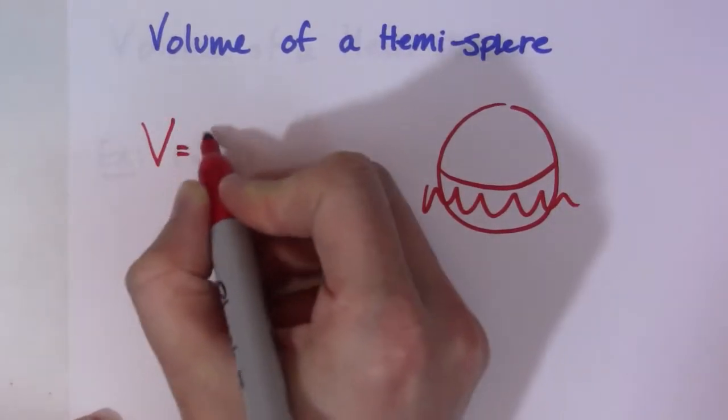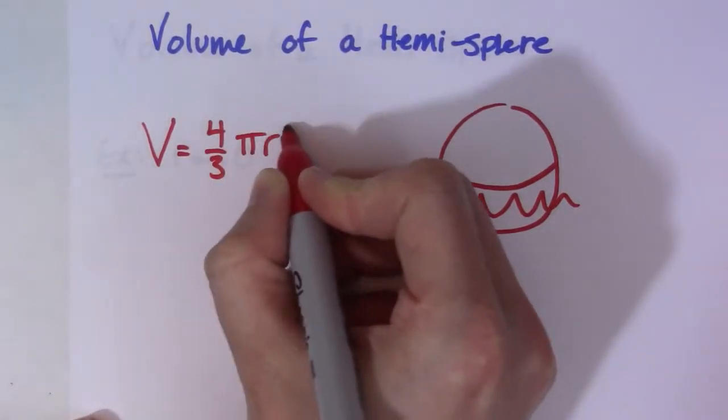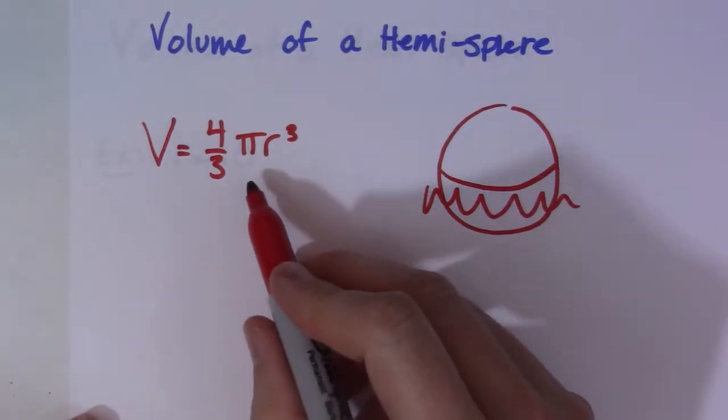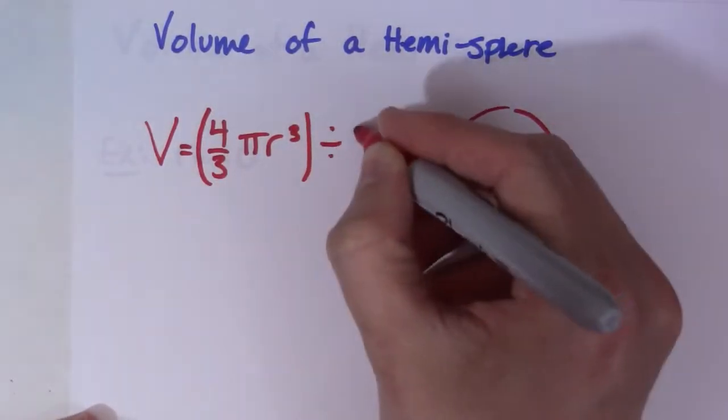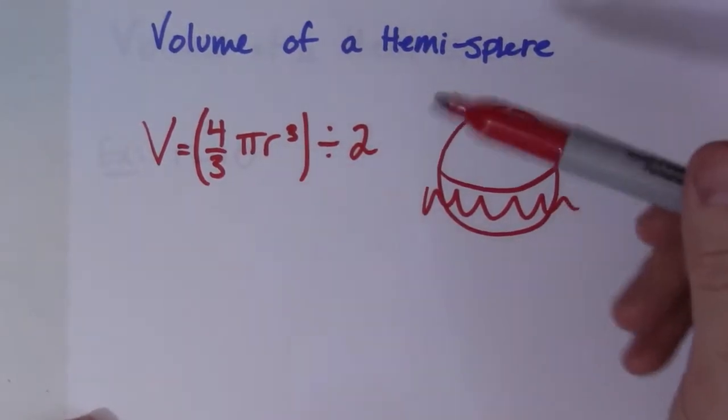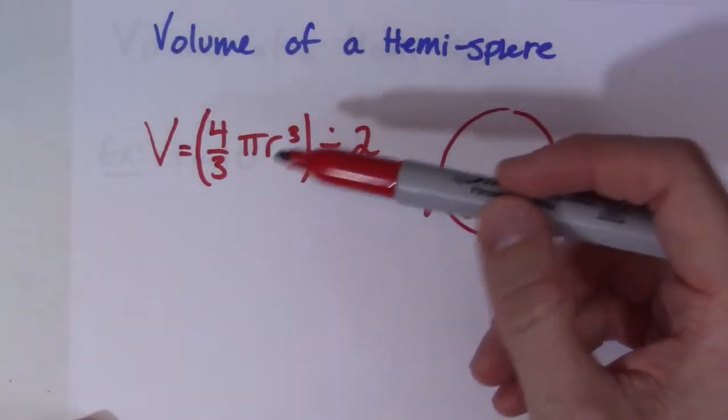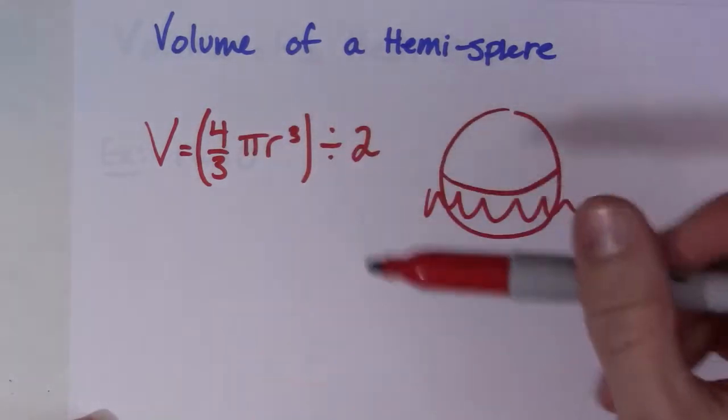So essentially what we have is exactly half the volume of a sphere. Four over three pi r cubed is the volume of a sphere. All I have to do is take that number and divide it by two. This is basically what most of my students do: find the volume of a sphere, then divide it by two.